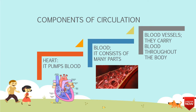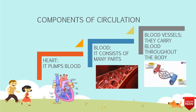The heart has four chambers. We are going to see about that in the upcoming slides. And blood vessels — they are of three types: arteries, veins, and capillaries. We are also going to see about those in the upcoming slides.